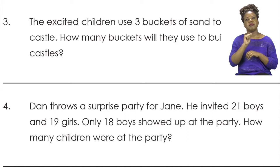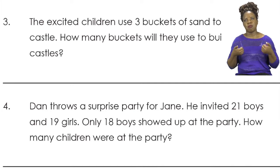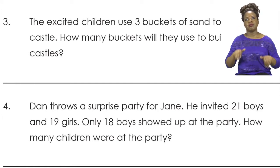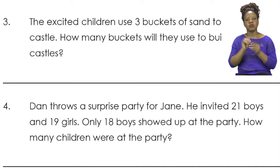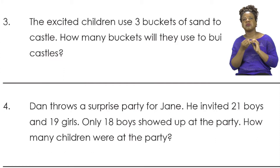Dan throws a surprise party for Jane. He invited 21 boys and 19 girls. Only 18 boys showed up at the party. How many children were at the party? Now we're going to read it a second time, and this time I want you to try and pick out the important information — the things that are going to help us solve the problem. We also need to find out what we need to do. Are we adding? Are we subtracting? Are we multiplying? Or are we sharing?